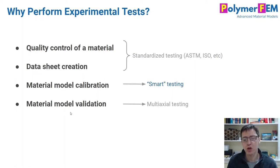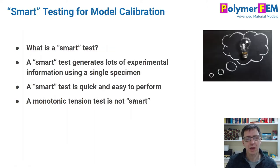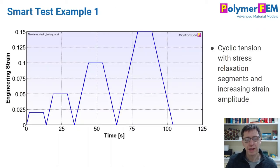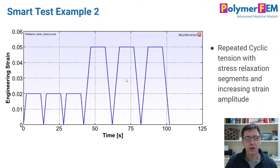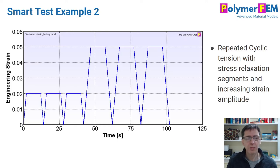Smart testing gives you a lot of information from a little bit of work. For example, if you load the material in tension, hold it, unload, hold, and keep doing these cycles, you get information about the loading response, the unloading response, and the relaxation response at different strains — all very useful for a viscoelastic or viscoplastic material model. You can also do repeated cycles at each strain level to characterize damage in the material.